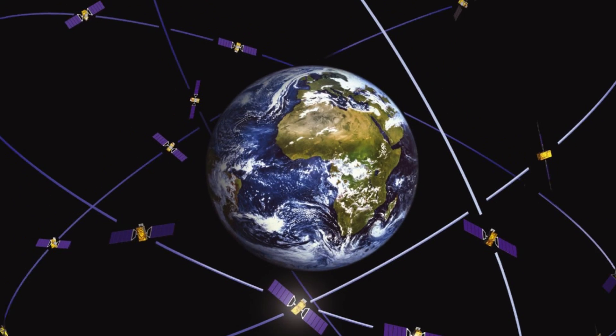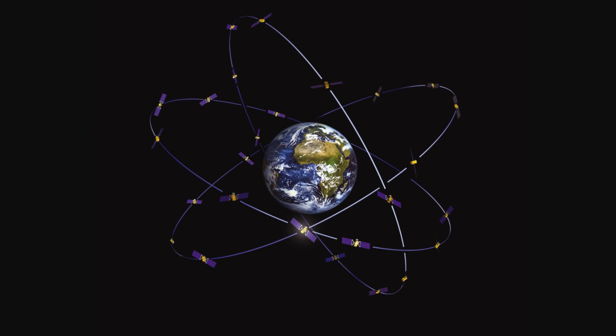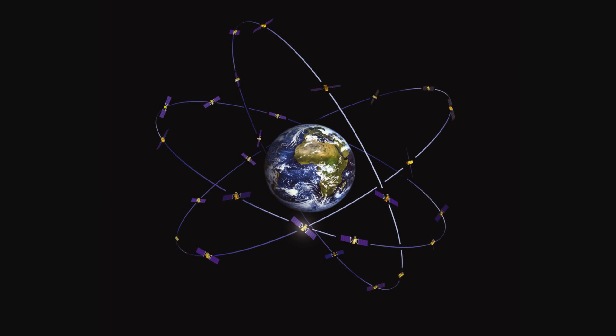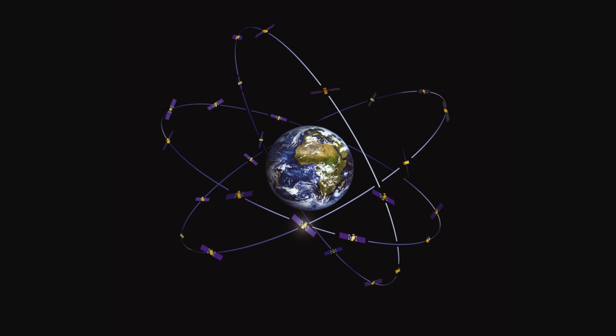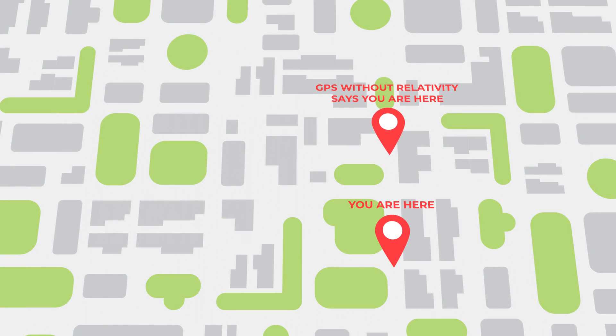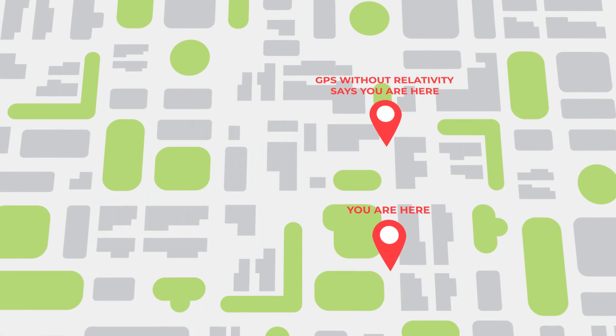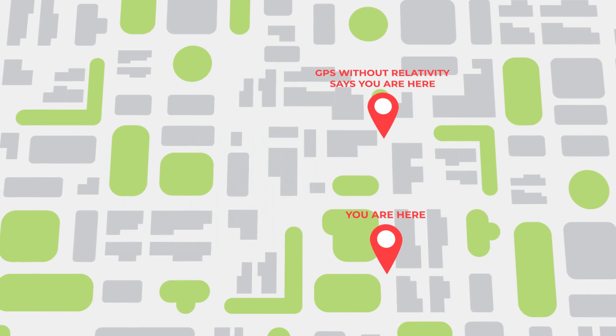On a more practical level, for anybody who's been lost and had their phone save them, they've got general relativity to thank. There's a constellation of satellites circling the Earth, and each satellite contains a very precise atomic clock. Together, they are called the Global Positioning System, or GPS. A receiver in your phone listens to the signal from the satellites and figures out your location with a precision of 10 feet or so. That precision depends crucially on Einstein's theory of general relativity. If you didn't take into account the effects of relativity, they'd get your location wrong. In a single day, GPS would say that you were six miles away from where you actually are. This is the most familiar and practical demonstration that Einstein was right.